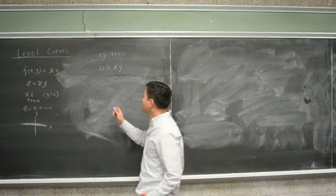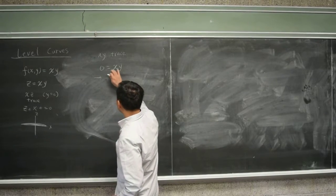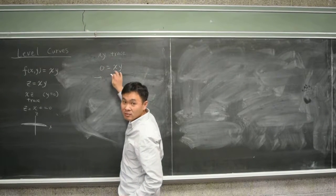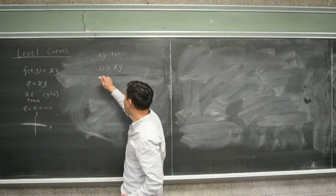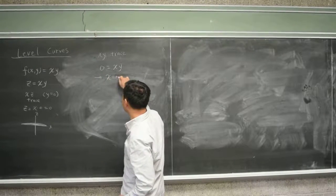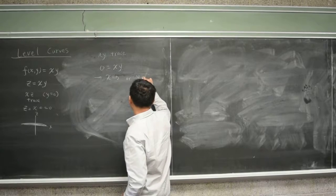This means it's either, if two things are multiplied to give you zero, then either one of them is zero. So for this to happen, either x is zero or y is zero.